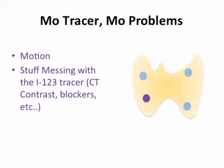The dual tracer technique has problems. Motion is one issue — if the patient moves between the two exams, the subtraction will be artifactual. Anything that interferes with iodine uptake is also a problem, such as medications like amiodarone, blocking agents, or CT contrast.